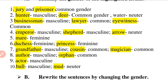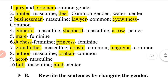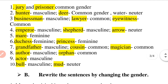Question number 3: 'The businessman asked his lawyer to speak to the eyewitness.' There are three nouns: businessman is masculine gender, lawyer is common gender, and eyewitness is also common gender.